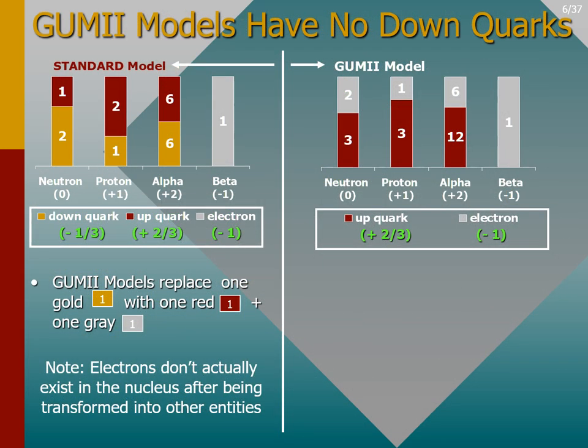The GUMMI models are unique in that they have no down quarks. This is due to an exchange inside the standard model particle bank vault described on the prior slide. This exchange enables 3D models, simplifies quark counting, and makes the atomic nucleus more understandable. The down quark to up quark substitution eliminates the use of the non-fundamental down quark, allowing the GUMMI models to be drawn with just two particle types.